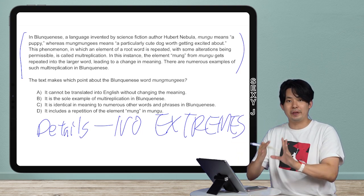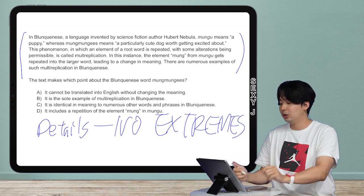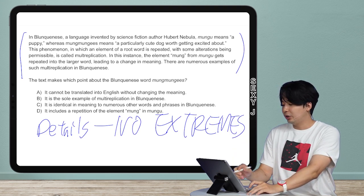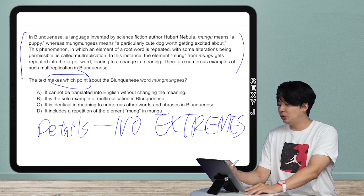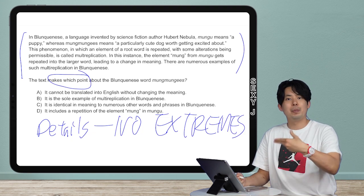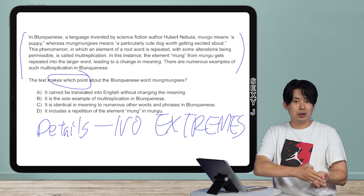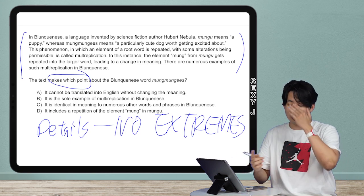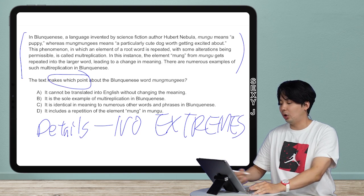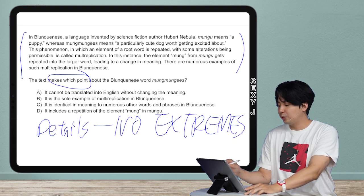Let's look at this question. The text makes which point. Notice how we don't have main idea, main purpose, primary. What does that mean? It is not a central idea question, it is a detail question.